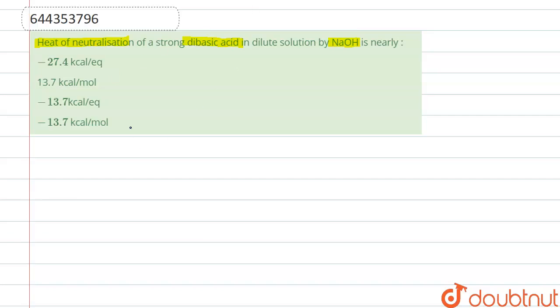So first we know that the n-factor, n-factor of NaOH is one. So here n-factor is the number of OH. NaOH is a base.